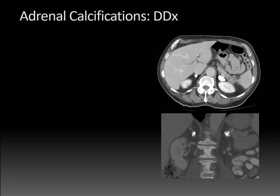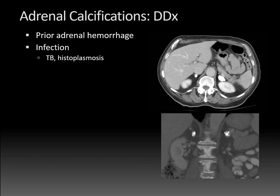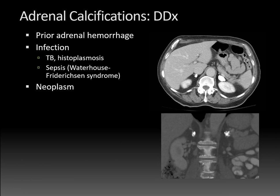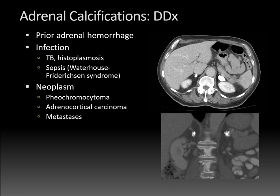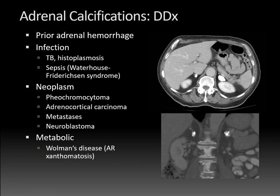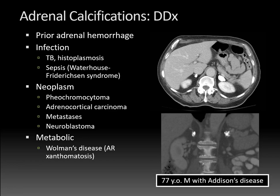The differential diagnosis for adrenal calcifications includes: prior adrenal hemorrhage (one of the most common causes); infection due to tuberculosis or histoplasmosis; sepsis, typically Waterhouse-Friderichsen syndrome; neoplasms such as pheochromocytoma, adrenal cortical carcinoma, metastatic disease, and neuroblastoma in pediatric patients; and unusual metabolic diseases such as Wolman's disease, an autosomal recessive xanthomatosis. This patient was an older male with Addison's disease and adrenal insufficiency, which can occur after bilateral adrenal hemorrhage.